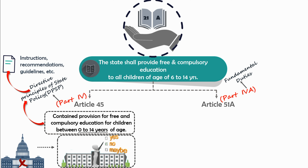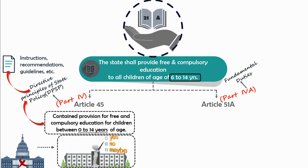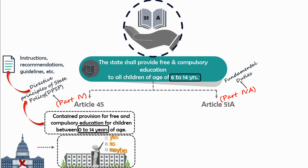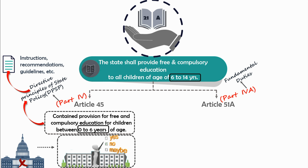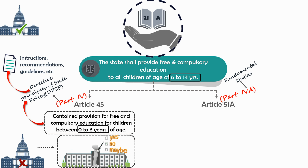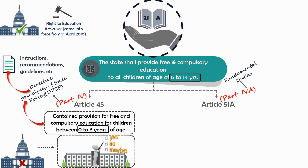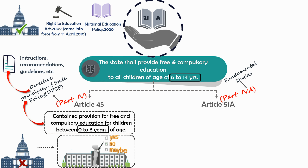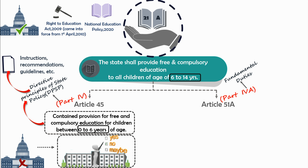When Article 21A was introduced, it mentioned that children between 6 to 14 years would be given free and compulsory education. Article 45 also talked about providing free education to children of 0 to 14 years. So after the introduction of Article 21A, the limit of Article 45 was reduced from 0 to 6 years. In order to make Article 21A enforceable in court, the Right to Education Act 2009 was introduced, which came into force from 1st April 2010. Apart from this, recently the National Education Policy 2020 has also been introduced, under which many things have been changed in the education system.